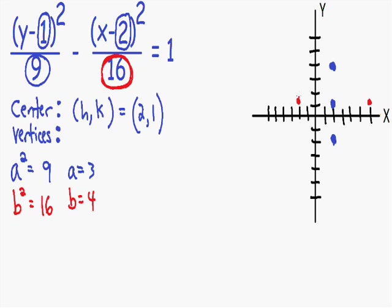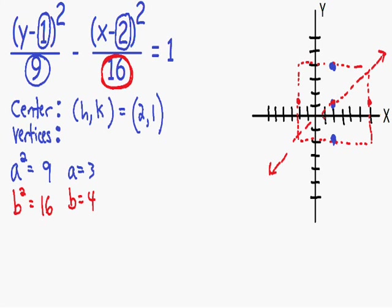To plot the asymptotes, I draw a rectangle: straight vertical lines from the left and right b-points, and straight horizontal lines from the vertices. The asymptotes always go through the center and through the diagonals of that rectangle. One asymptote goes through the center and one pair of diagonals; the other asymptote goes through the center and the other pair of diagonals.